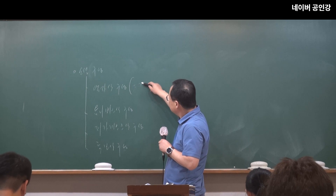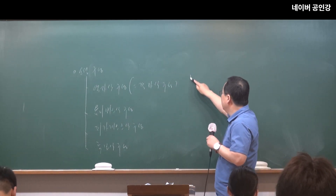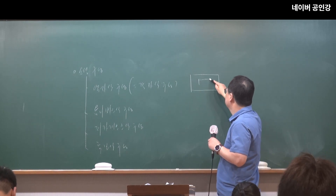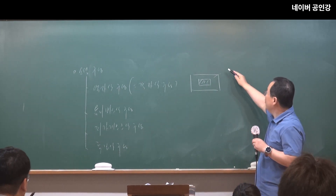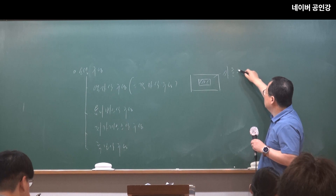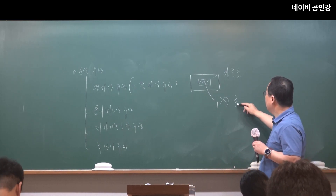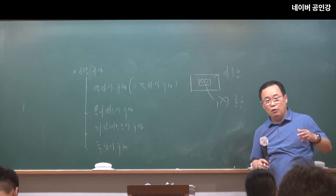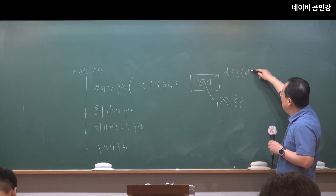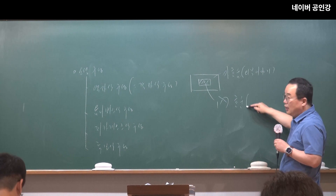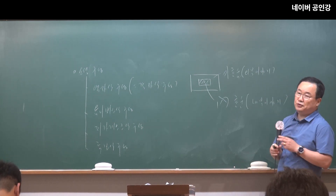액자식 구성은 다른 말로 격자식 구성이라고도 합니다. 소설의 구조에서 겉에 있는 이야기를 외화(外話)라고 하고, 안에 있는 것을 내화(內話)라고 합니다. 외화는 외부 이야기, 내화는 내부 이야기라고 할 수 있습니다.